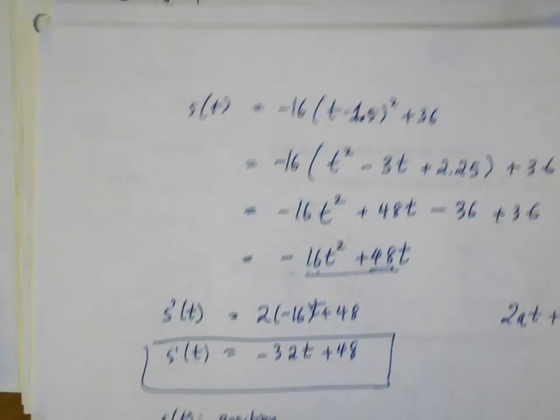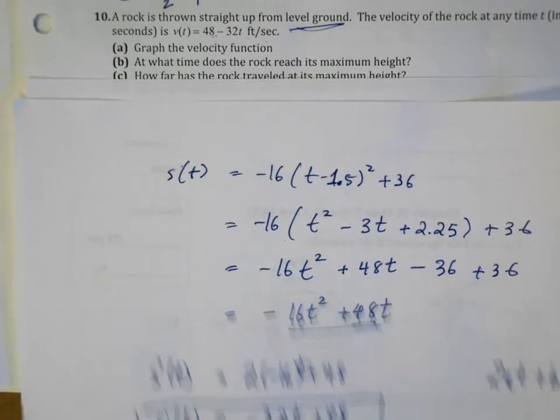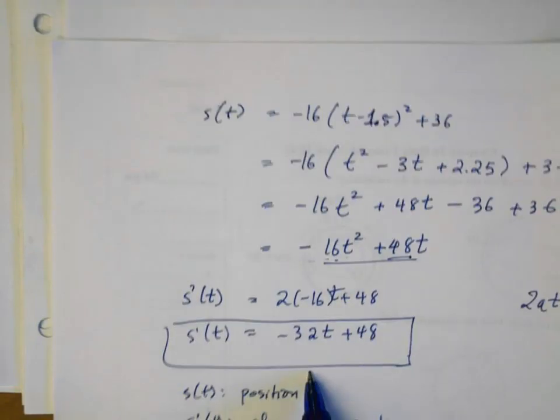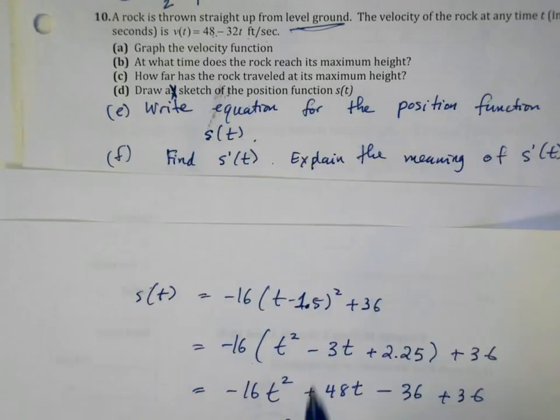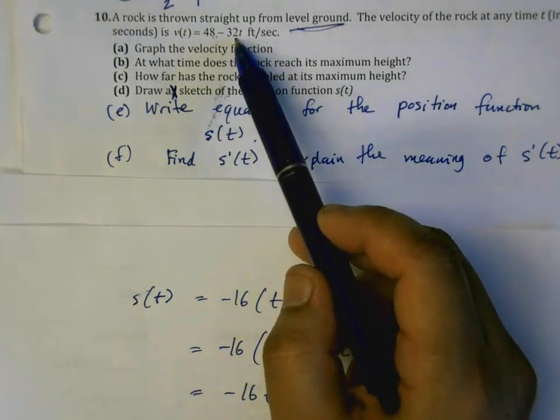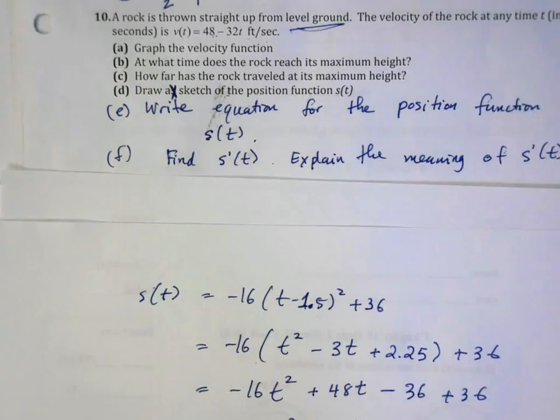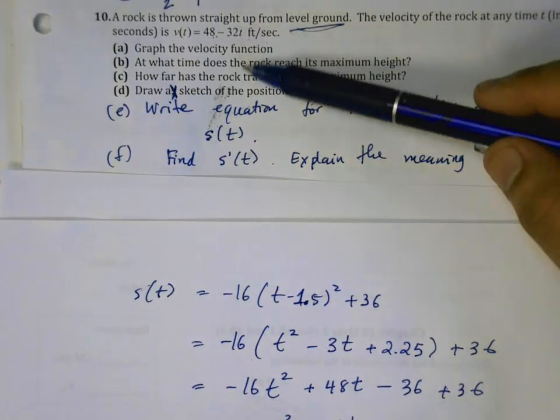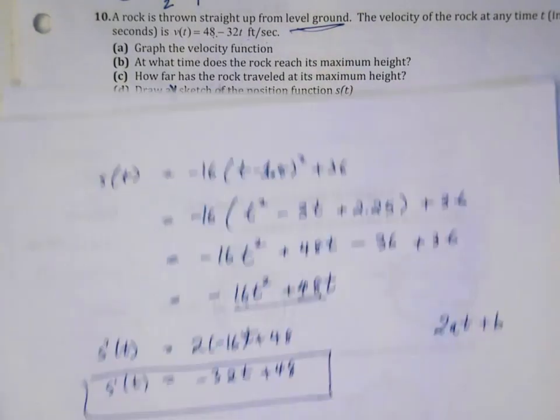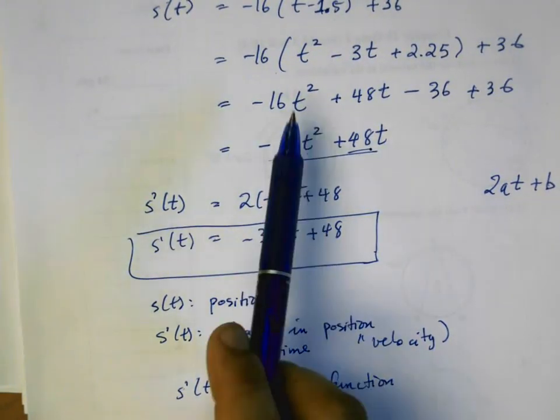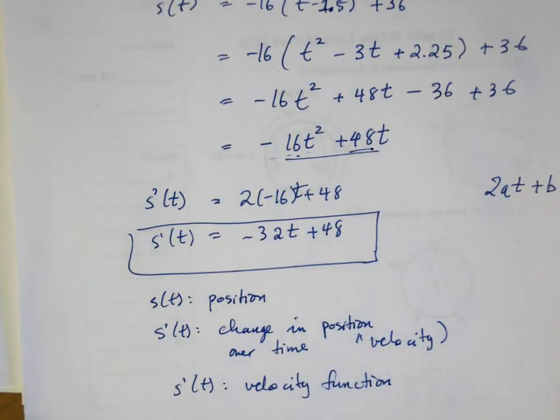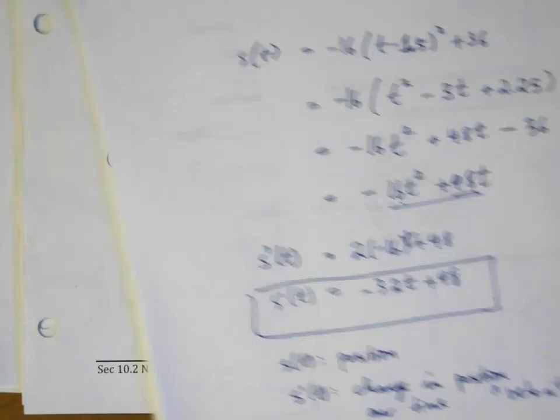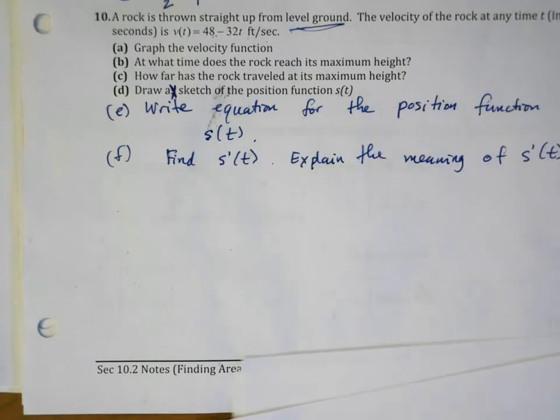Now we just need to somehow figure out what this a is equal to. To do that we can use either of these points (0, 0) or (3, 0), so I'm just going to use (0, 0) because that's much simpler. This is 1.5 squared plus 36, so negative 36 equals 2.25a, so that means a is equal to negative 16. So our final equation then is s(t) is equal to negative 16(t minus 1.5) squared plus 36.